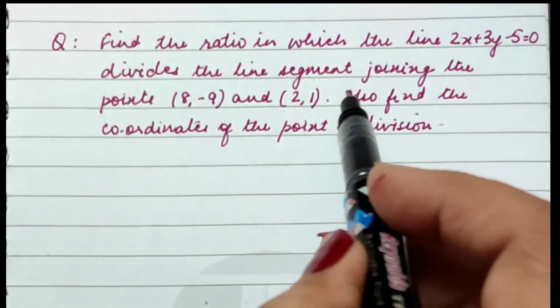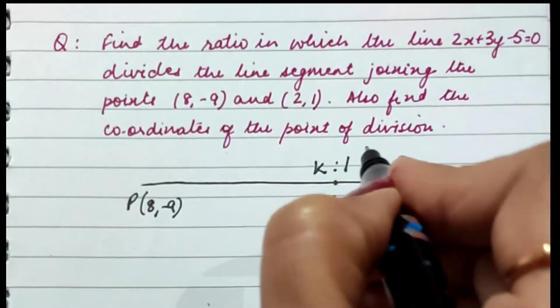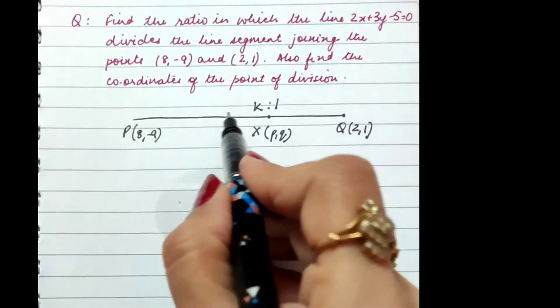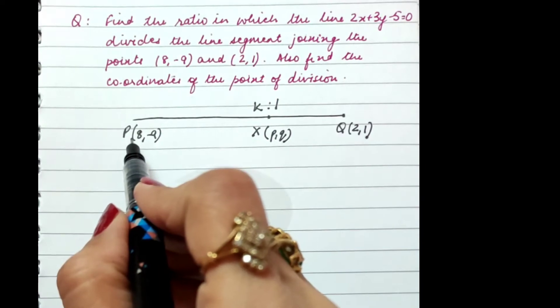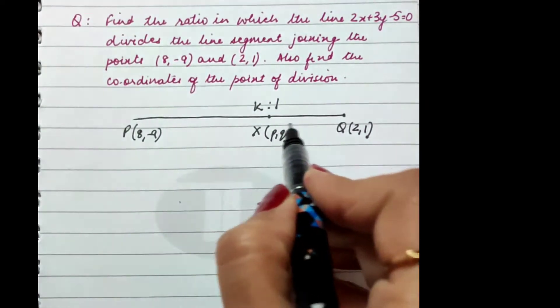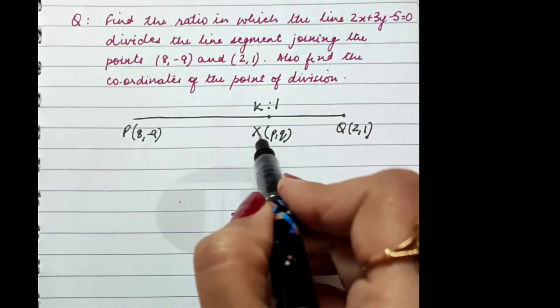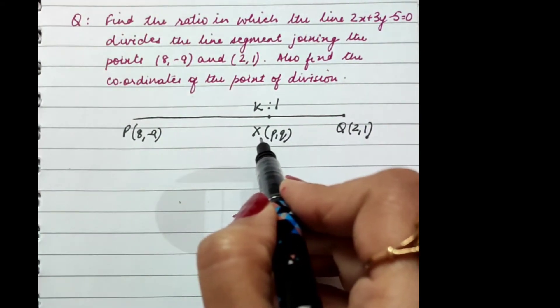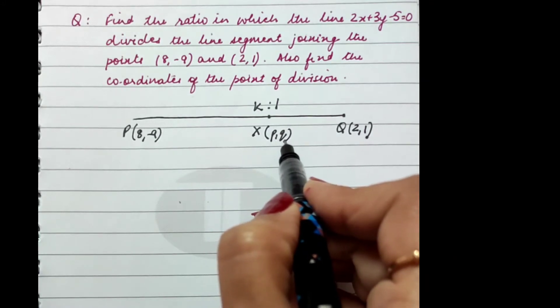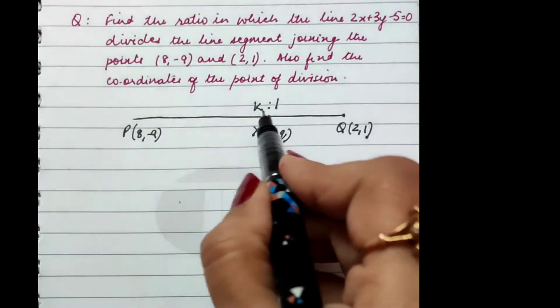First, visualize it with a diagram. I've drawn a line segment PQ with endpoints P(8, -9) and Q(2, 1). If I take a point X on PQ such that it divides this line in the ratio k:1,